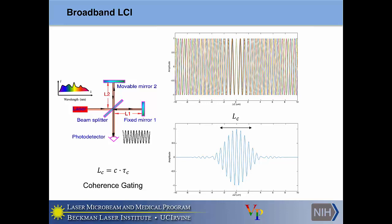That poor temporal coherence comes about due to the broad bandwidth of the laser. As we add more and more wavelengths, we reduce the width of the modulation window — essentially reducing the coherence length of the laser.